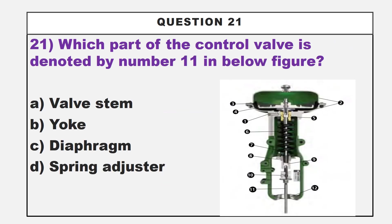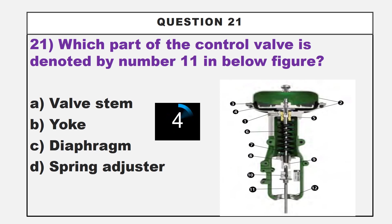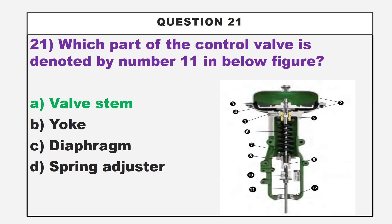Moving to our 21st question. A figure is given here — please observe it properly. The question is: which part of the control valve is denoted by number 11 in the given figure? Option A: valve stem. Option B: yoke. Option C: diaphragm. Option D: spring adjuster. The correct answer is option A, valve stem.